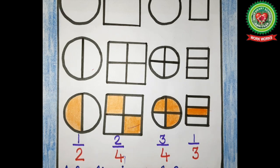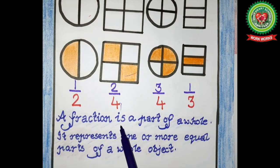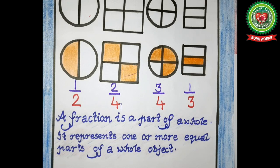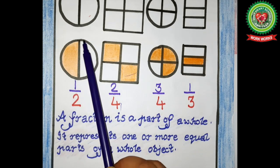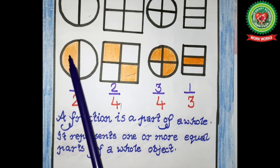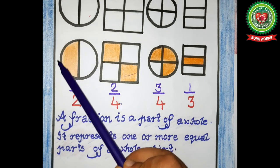These numbers are called fractions. So what is a fraction? A fraction is a part of a whole. It represents one or more equal parts of a whole object. Now what is the meaning of 'whole'? Whole means a complete figure. You can see this is a complete circle — a full circle — and I have divided this circle into two equal parts. So a fraction is a part of a whole; one upon two means this part.